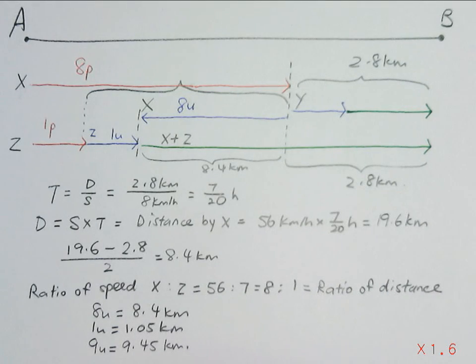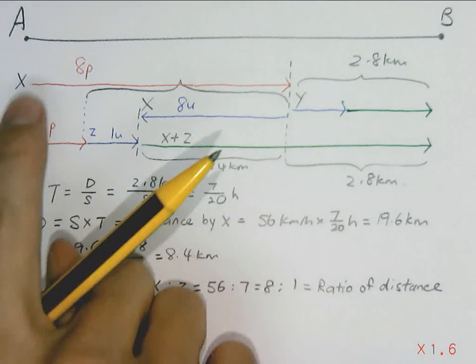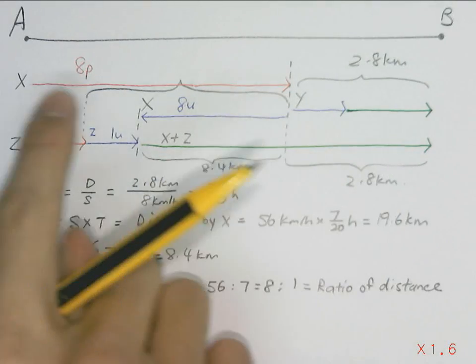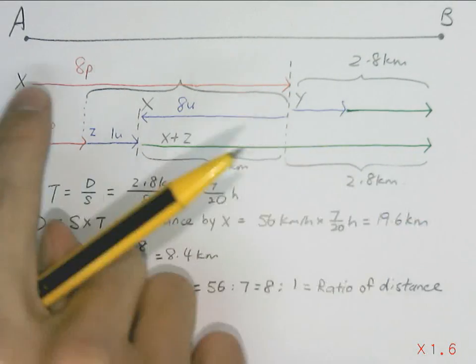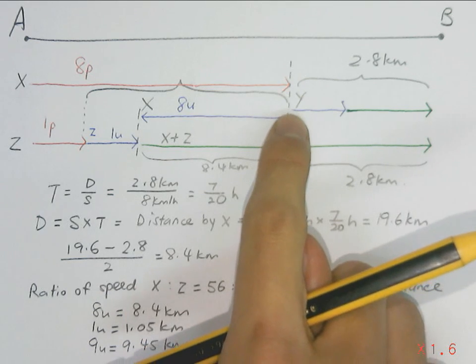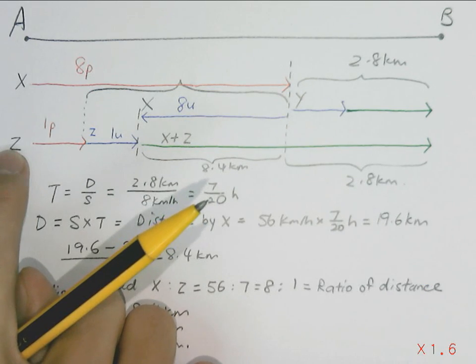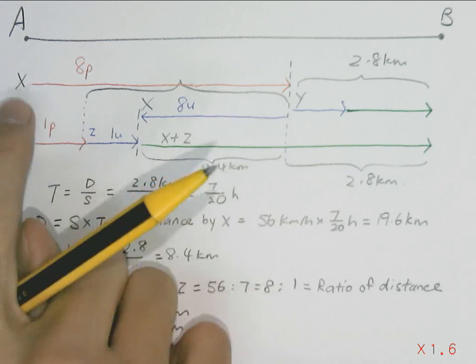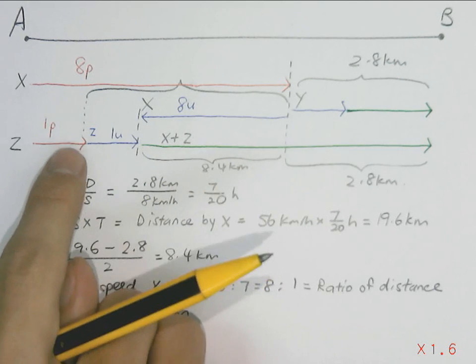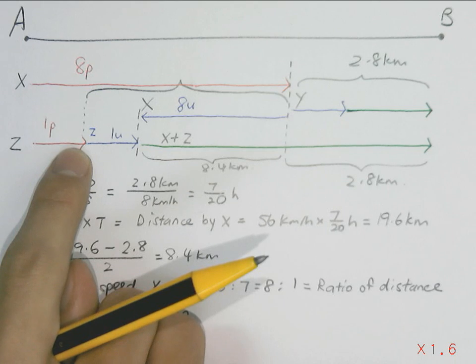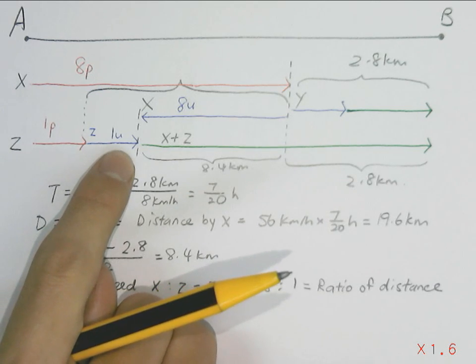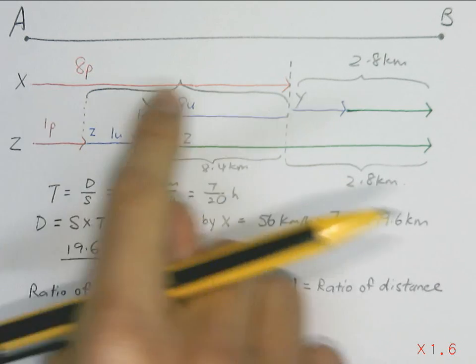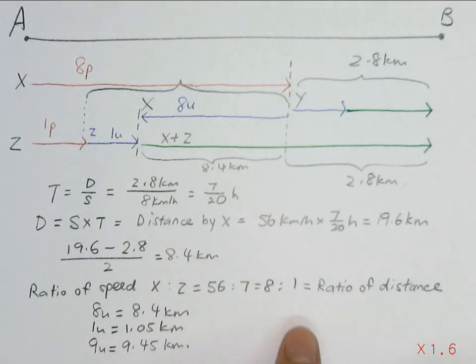Keeping in mind that if the time taken is the same for X to move from here, point A, to this point where it drops off Y, and for Z to this point, the ratio of distance will be the same as the ratio of speed, which is 8 to 1.